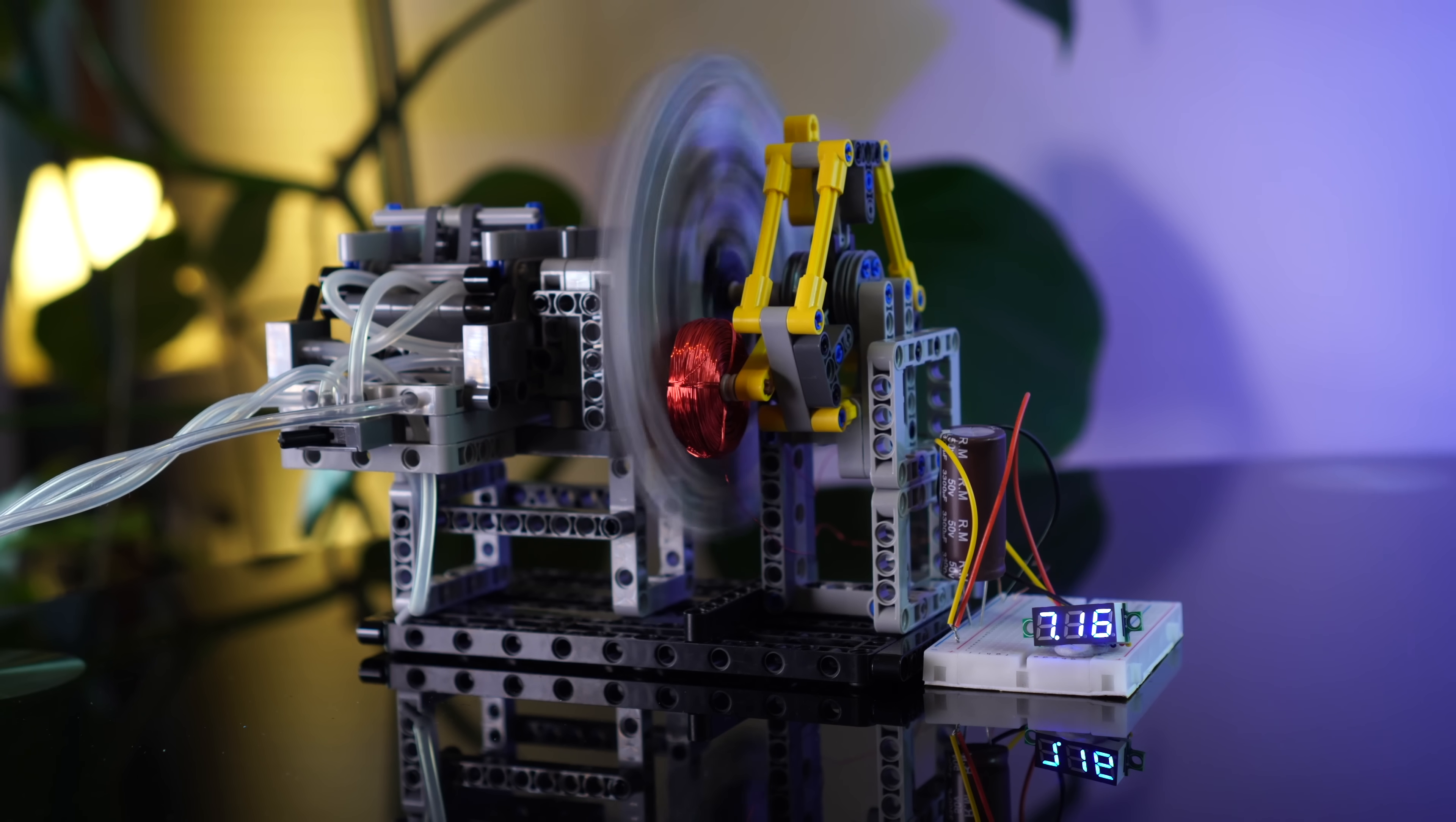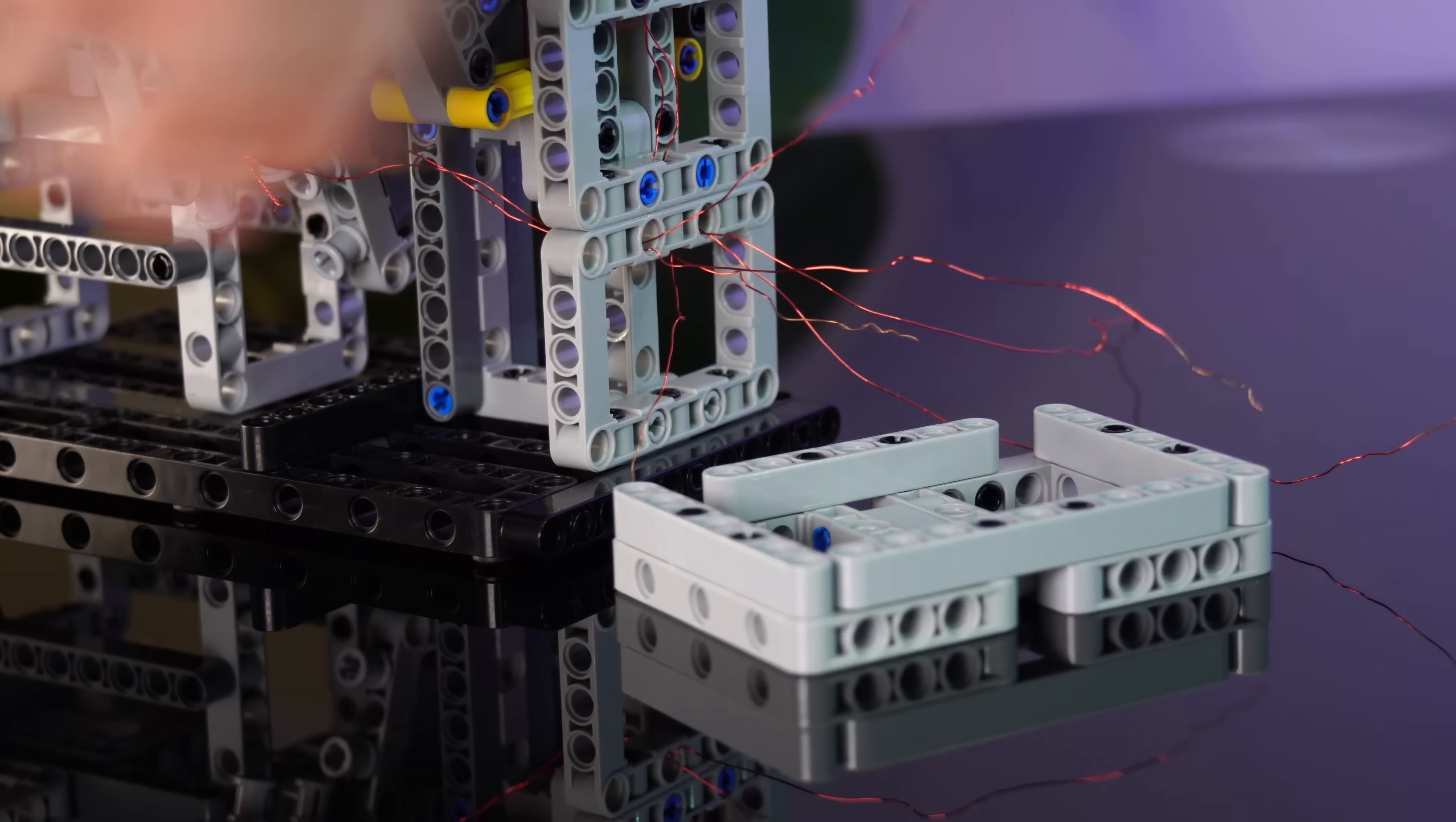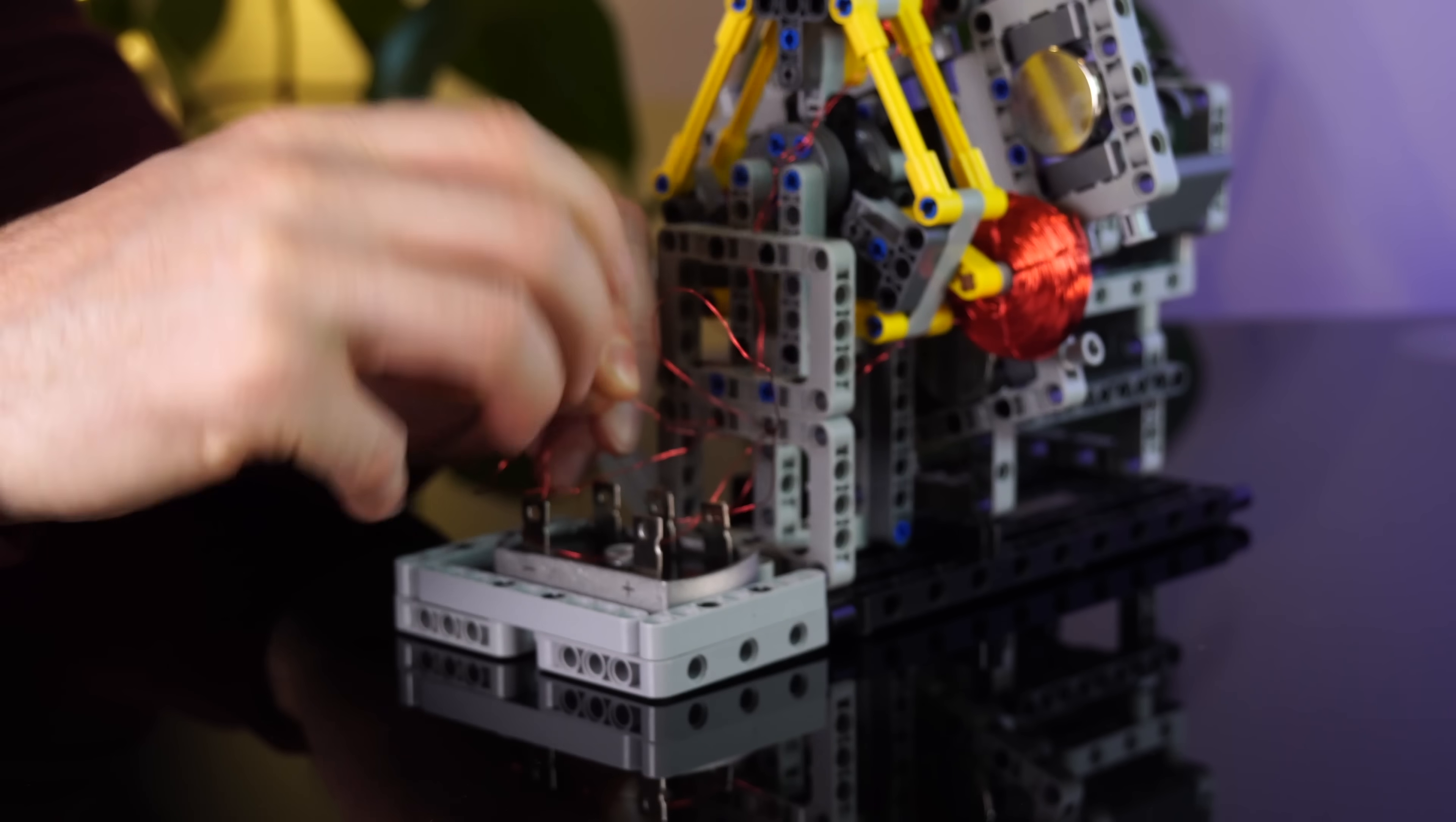But this is supposed to be a three-phase generator. So let's use this needlessly oversized rectifier to combine all the inputs into a DC signal. Now all three coils will contribute to a nice smooth output, with three times the current output.